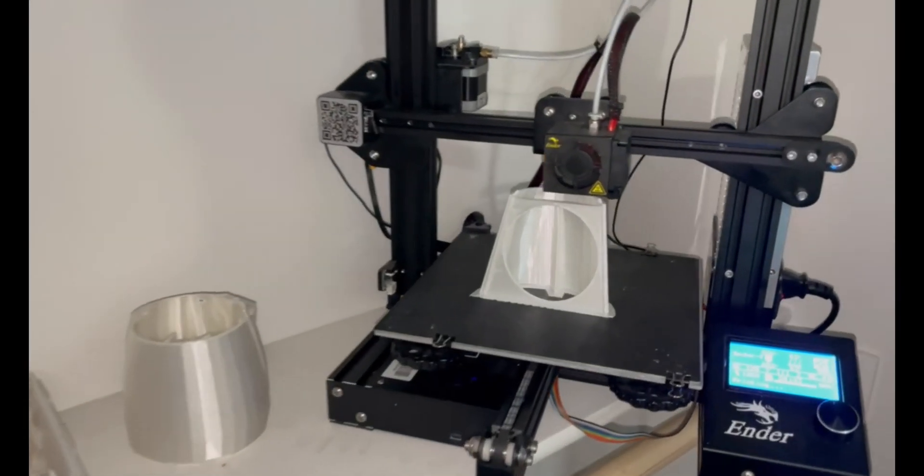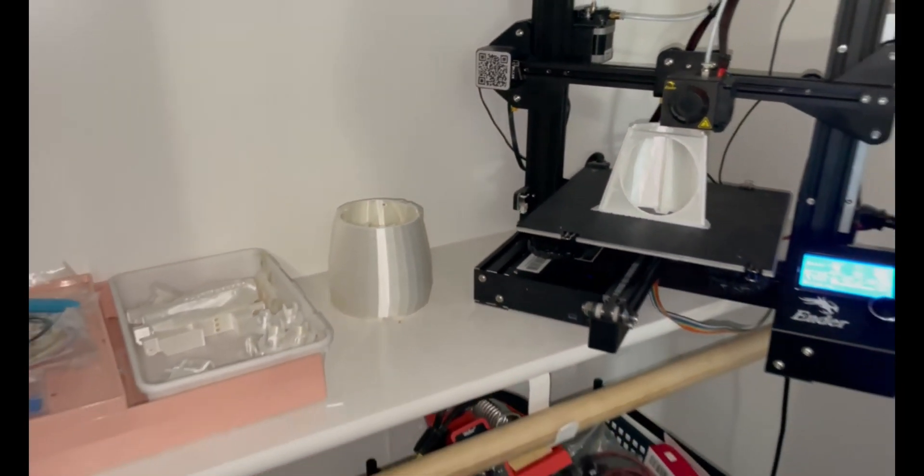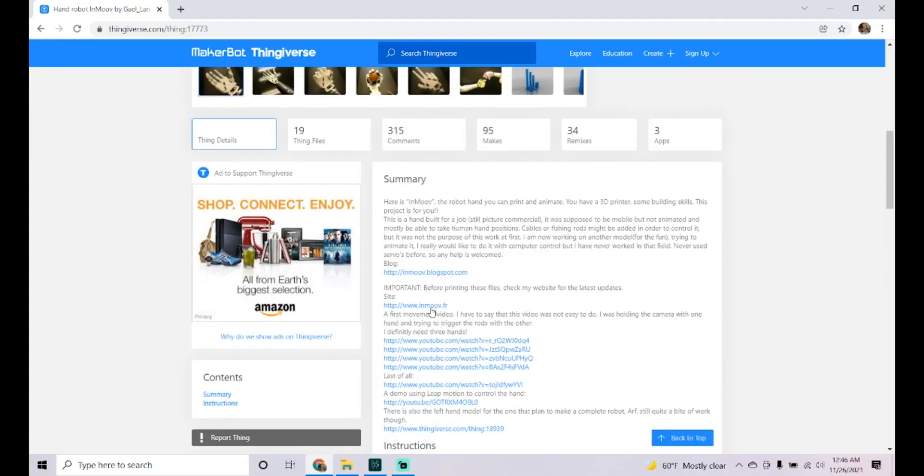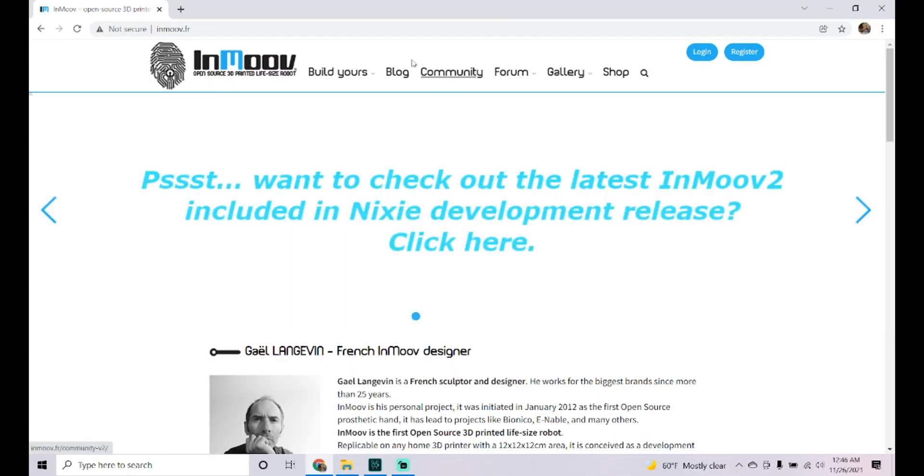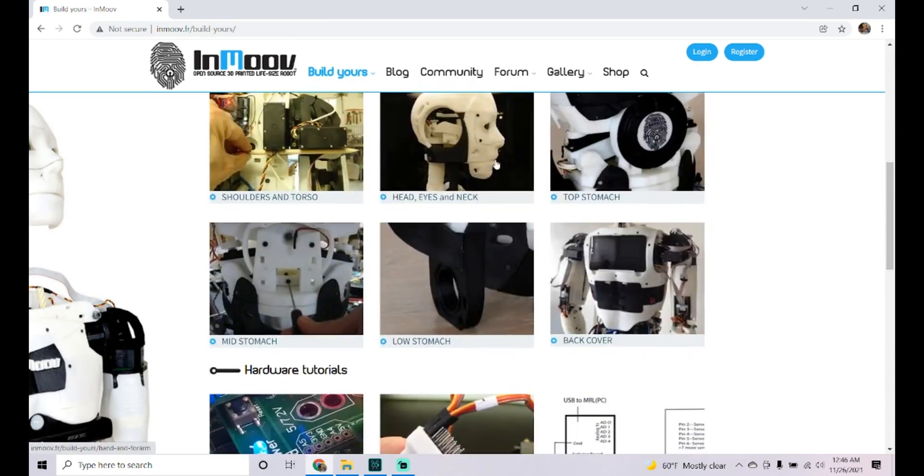To start the project, I 3D printed all of the STL files that I needed to build the hand. I got the files from Thingiverse, which directed me to a website called InMoov, and apparently this guy built an entire 3D printed robot, but I just needed the hand and forearm.